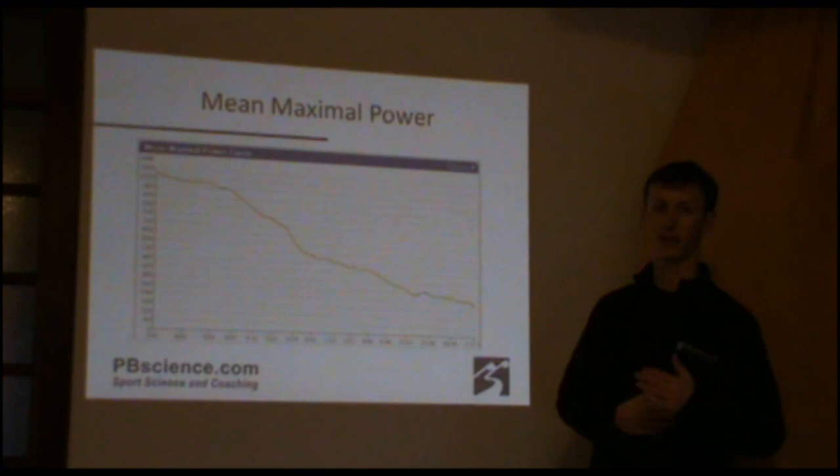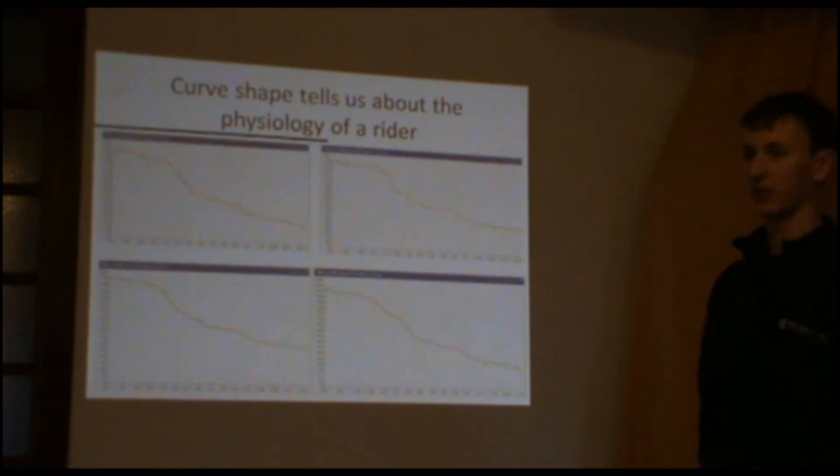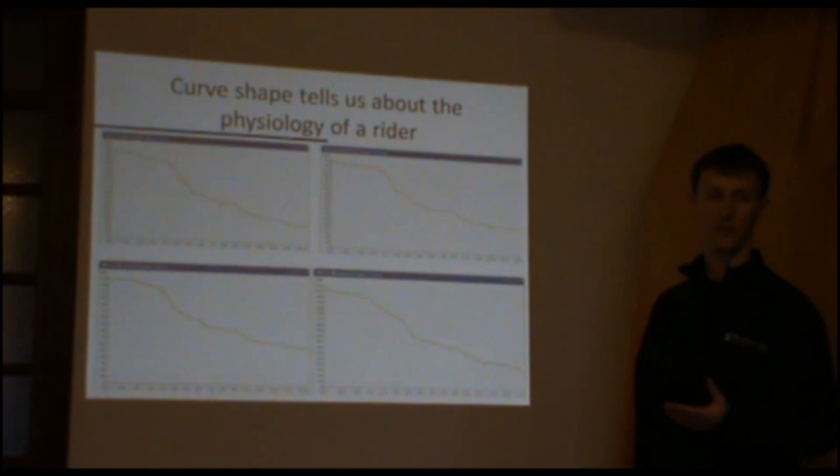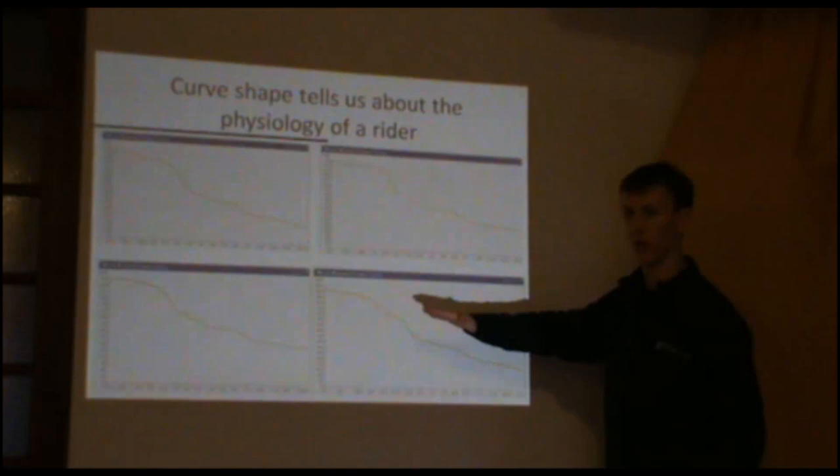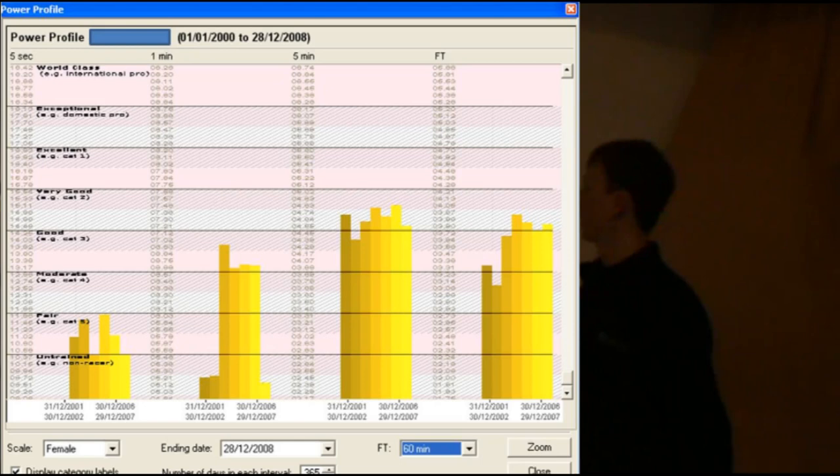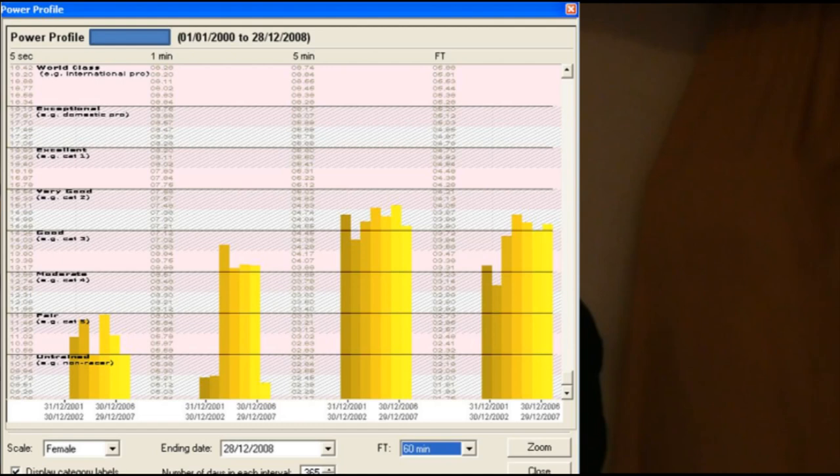And looking at the shape of that can help again with determining the strengths and weaknesses. I don't know if you can see that very clearly. So it's a few different plots there for different riders. We see some with almost a big shoulder here, a sharp drop-off. And then other riders, it's a bit more of a flatter profile. So we can look at that again with the strengths and weaknesses. And there's a similar thing again, it's looking at those durations that we get you to do in the power profile week. So you've got a five second block, a one minute block, a five minute block, and your functional threshold, your 60 minute power.